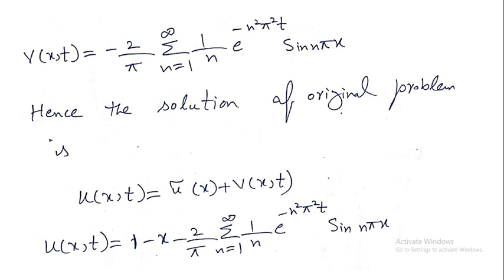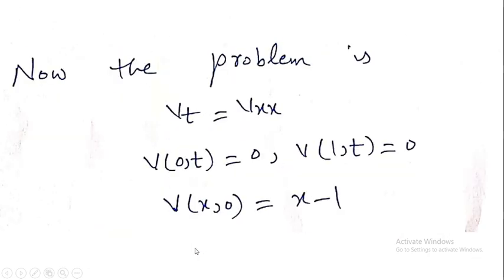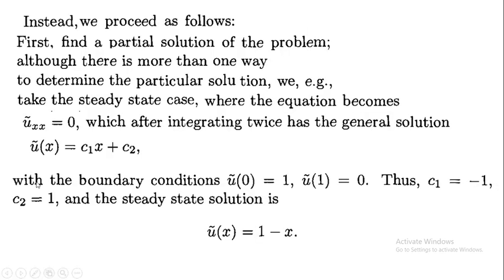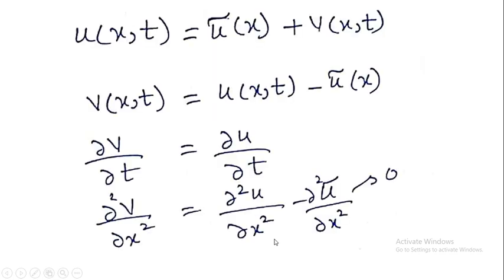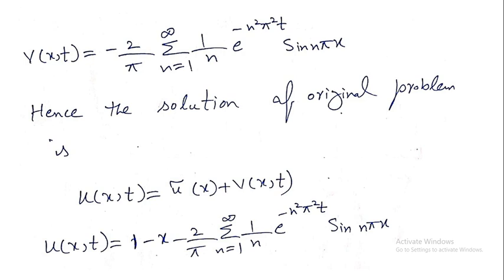Since ũ(x) was already calculated as 1 − x, and v(x,t) has now been computed, the solution of the original problem is: u(x,t) = ũ(x) + v(x,t) = (1−x) + (−2/π)·Σ(n=1 to ∞) (1/n)·e^(−n²π²t)·sin(nπx). This gives us the complete solution to the original problem.